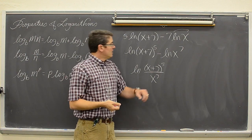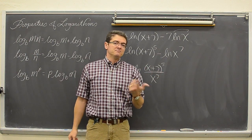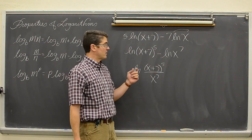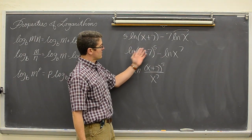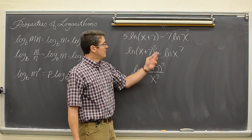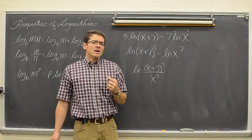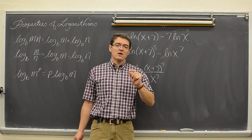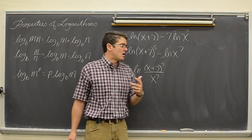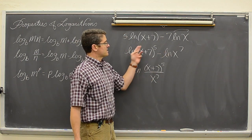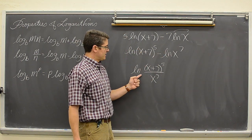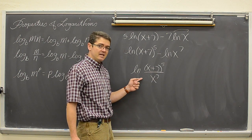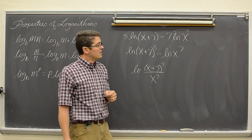Remember: when you take a log of a number — natural log, log base ten, log base anything — you do get an exponent. The log of something gives you an exponent. For example, log base ten of a hundred is two, that is an exponent; ten squared equals a hundred if you want to undo the log. And when do you subtract exponents? You subtract exponents when you divide under a like base. Our like base for natural log is e, which is 2.718.